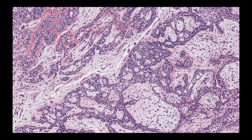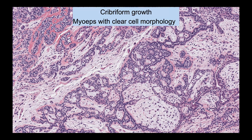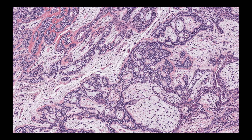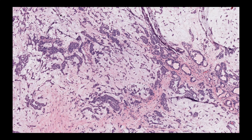Sometimes the tubular structures fuse and form cribriform formations, which might remind you of adenoid cystic carcinoma — one of the main differential diagnoses of pleomorphic adenoma. You may also see compressed tubular structures forming cords and microtrabeculae, with myoepithelial cells trickling into the surrounding fibromyxoid stroma.